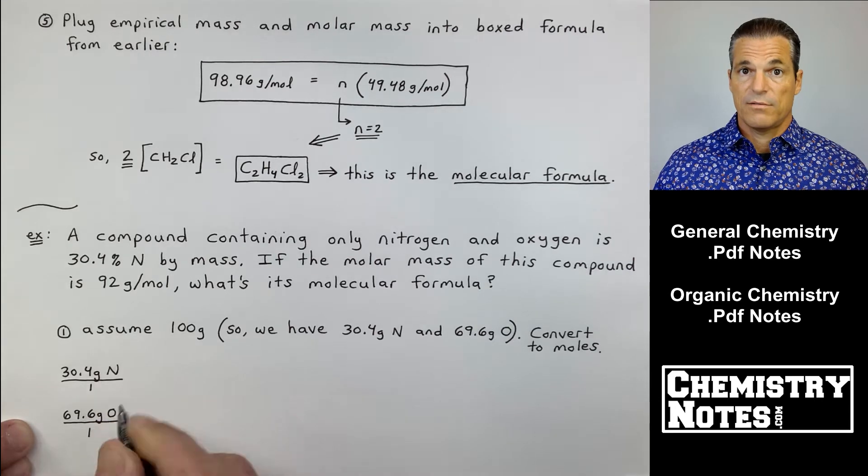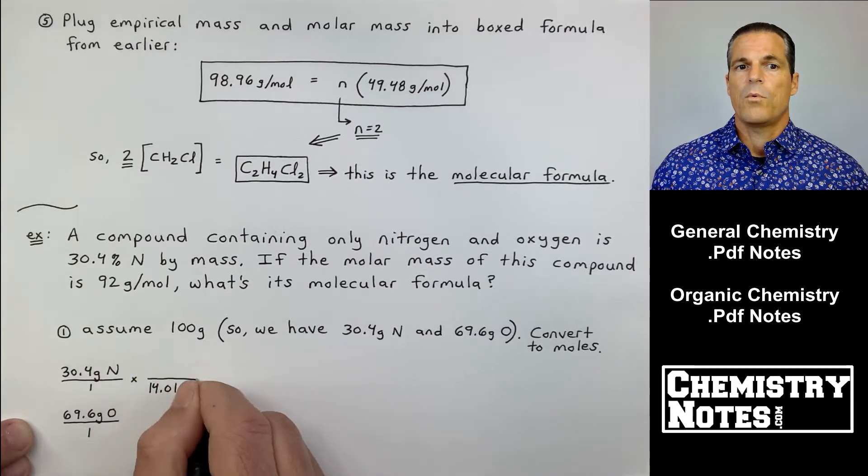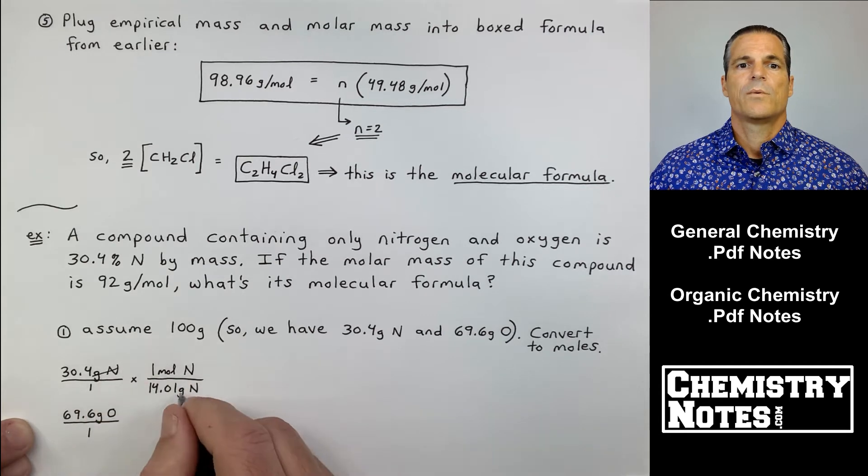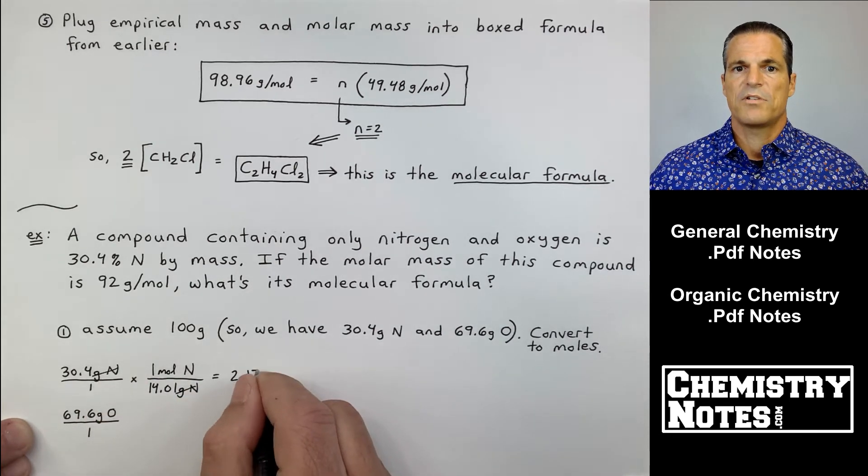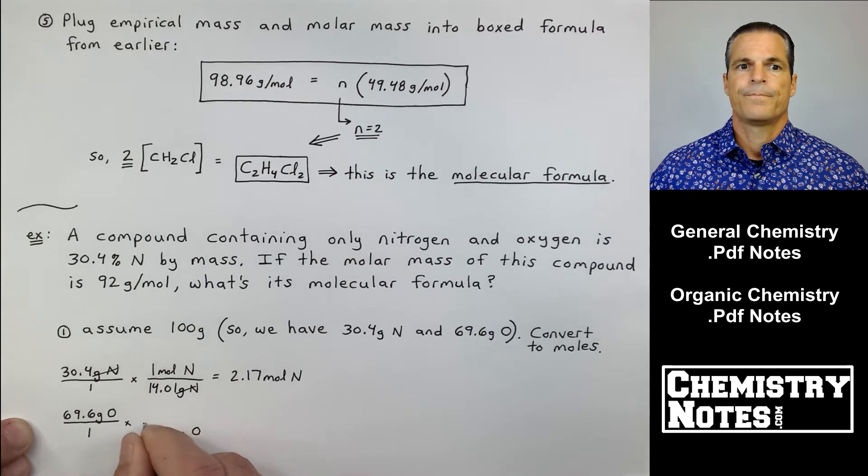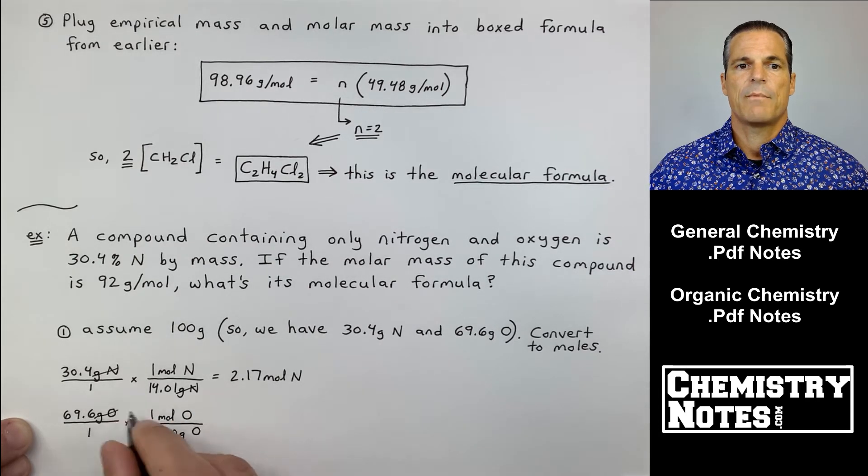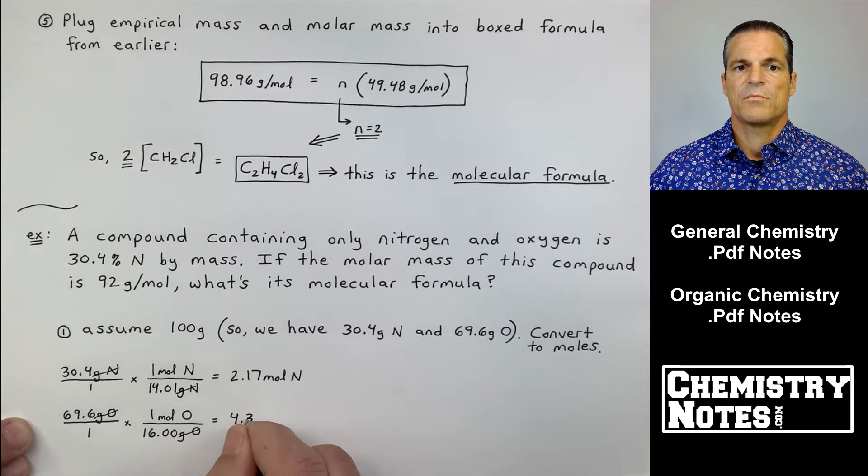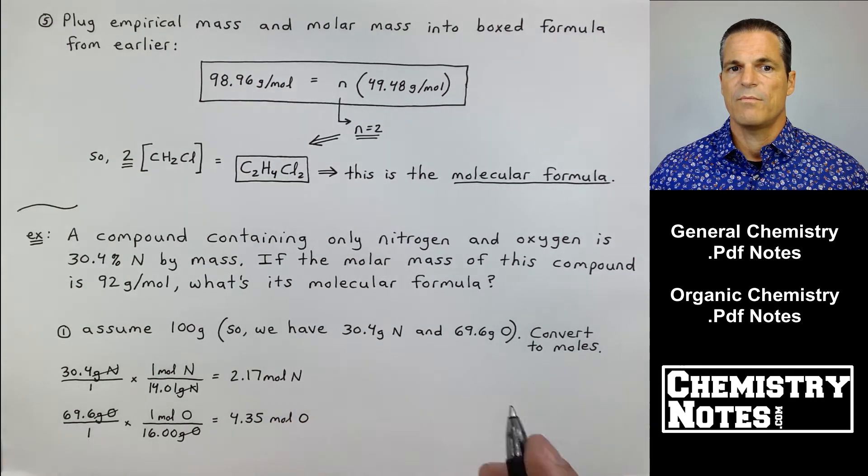Are we all okay knowing that oxygen is 69.6% here? 30.4% nitrogen by mass and there's only two types of atoms means that the other percentage leading up to 100 is oxygen.